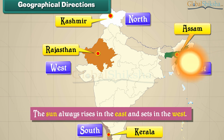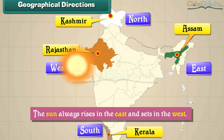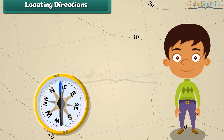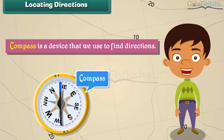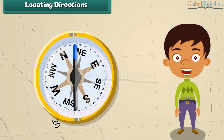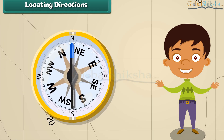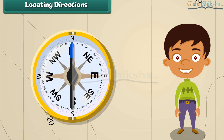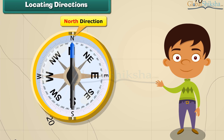The sun always rises in the east and sets in the west. A compass is a device that we use to find directions. A compass has a needle that rotates to indicate direction. The head of the needle always points towards north and the tail towards south.